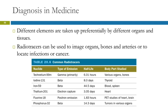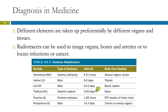Here's a partial list of things that can be used, including the types of emission, the half-lives, and the body parts that can be studied. Phosphorus-32 gives off beta emission and has a half-life of 14 days; it can be used to study tumors in various organs. Iron-59, a radioactive isotope of iron, can be used to evaluate your blood and your spleen.